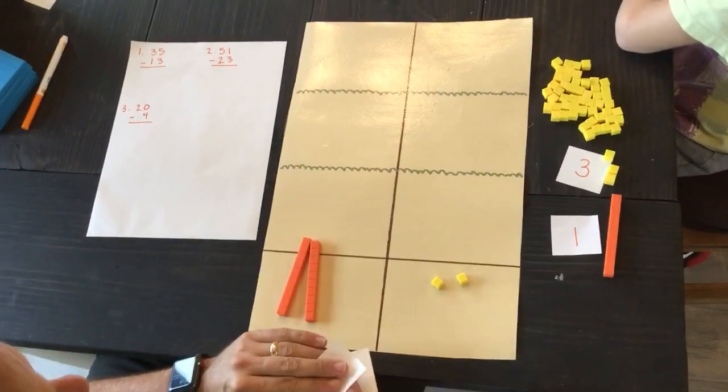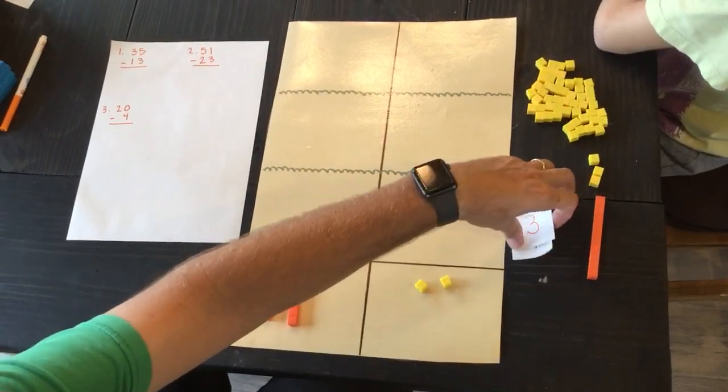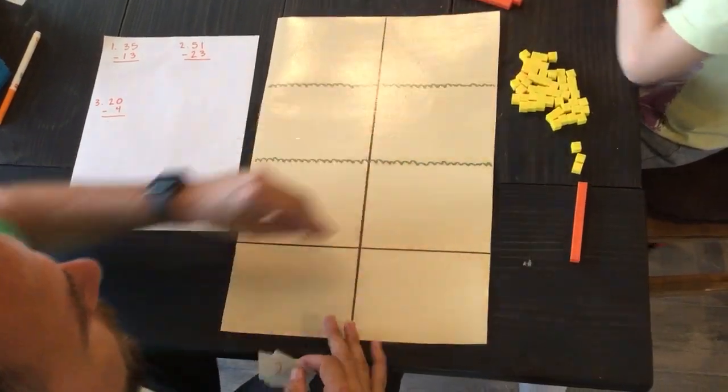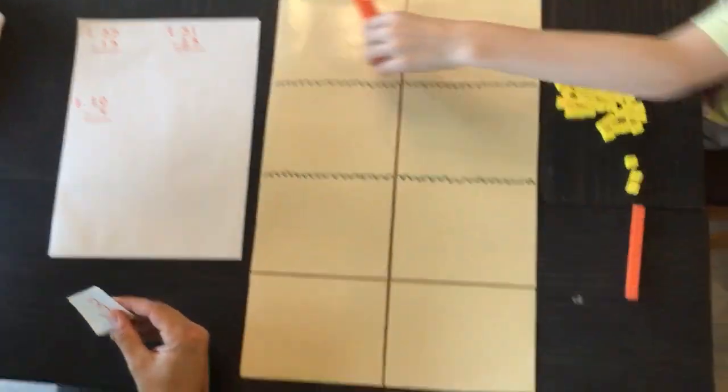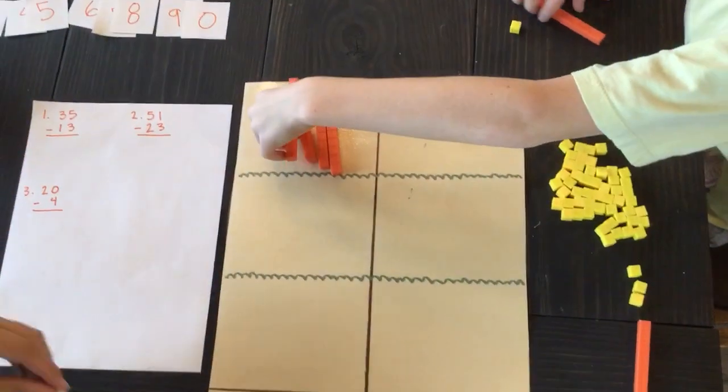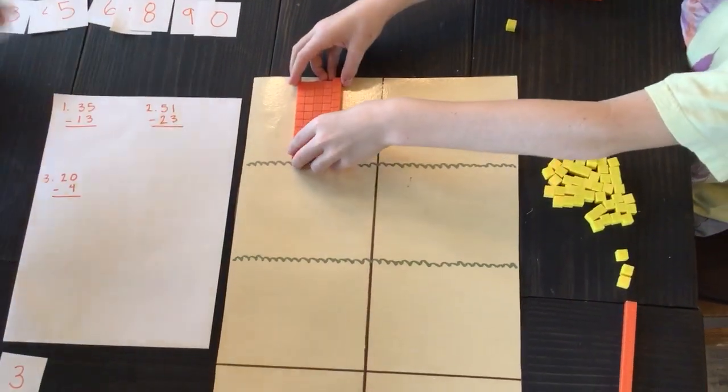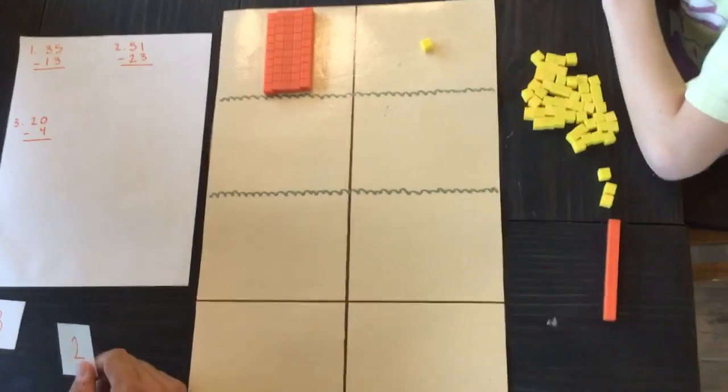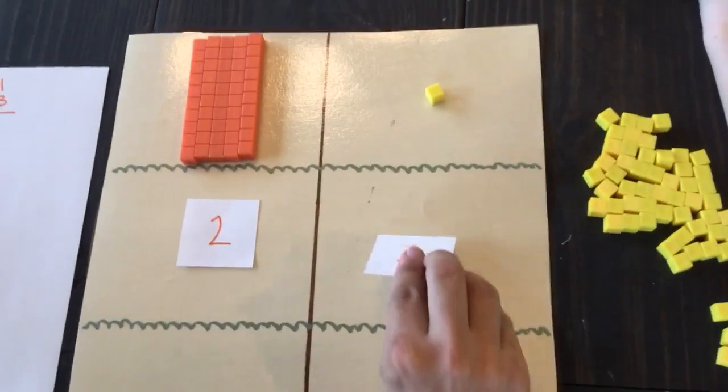Not on that one. So let's try one with regrouping. How about if we were doing 51 minus 23? So can you build 51 for me? Yep. Okay, we got five tens. We got one in the ones place. And we said we were going to subtract the number 23.